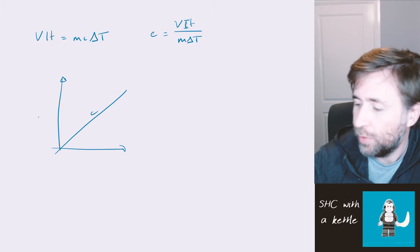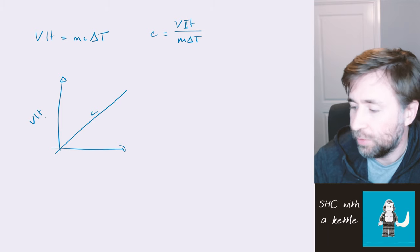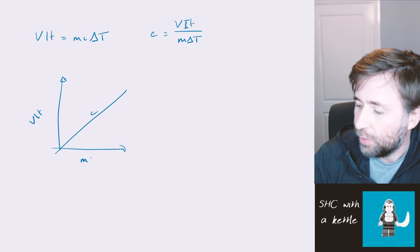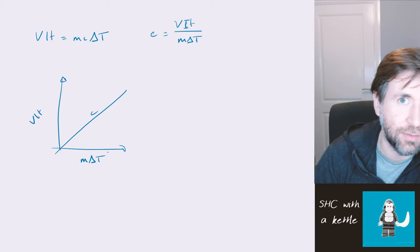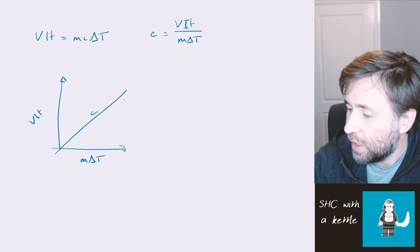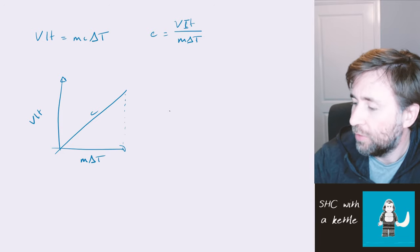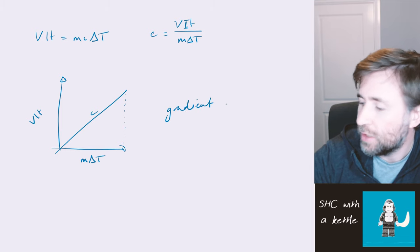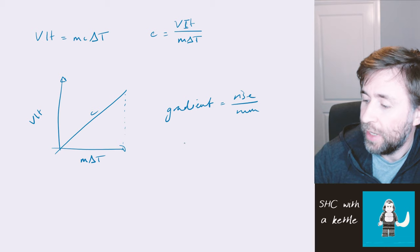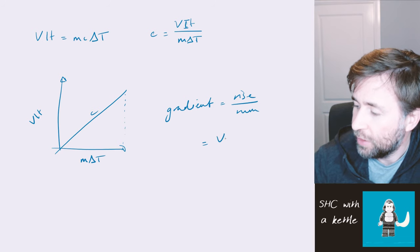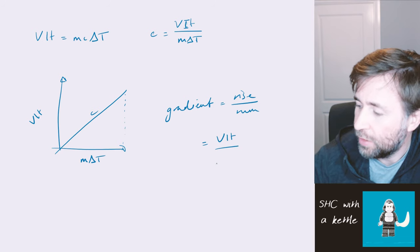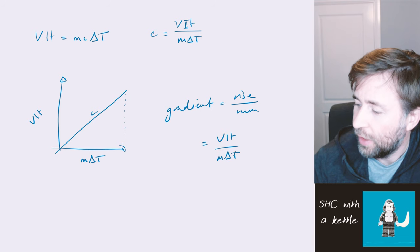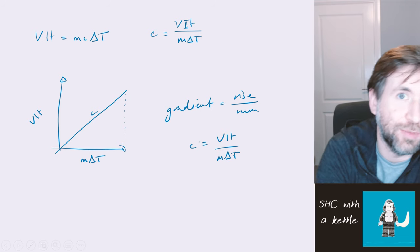So what am I going to plot on the y-axis? I'm going to plot VIT, that is the electrical energy supplied. And what I'm going to plot on the x-axis? That is the mass times temperature change. So now I have a situation where I have a gradient. Remember, gradients always equal rise over run. Our rise in this case is VIT, our run is M delta T, and so our gradient is our specific heat capacity.